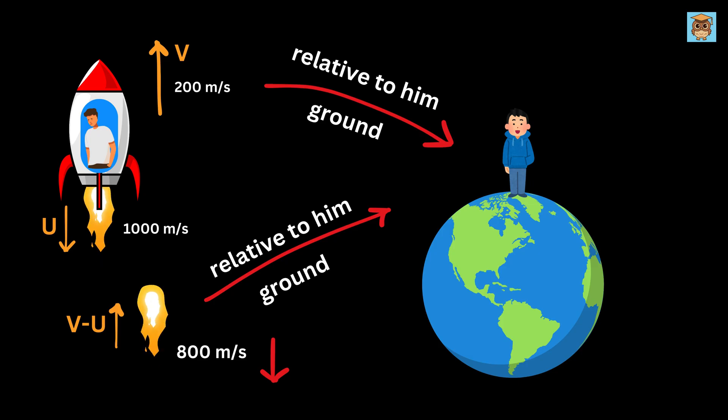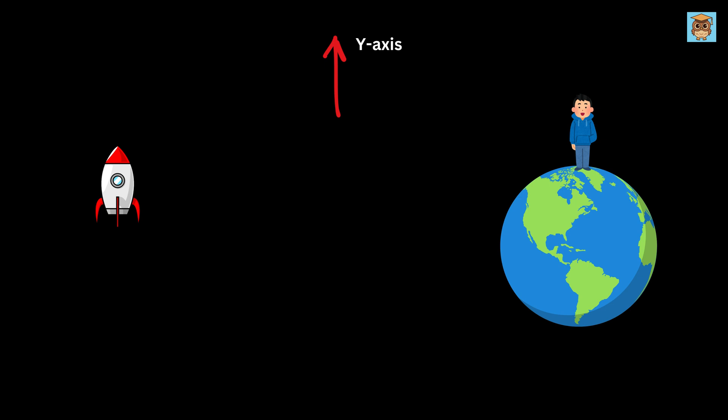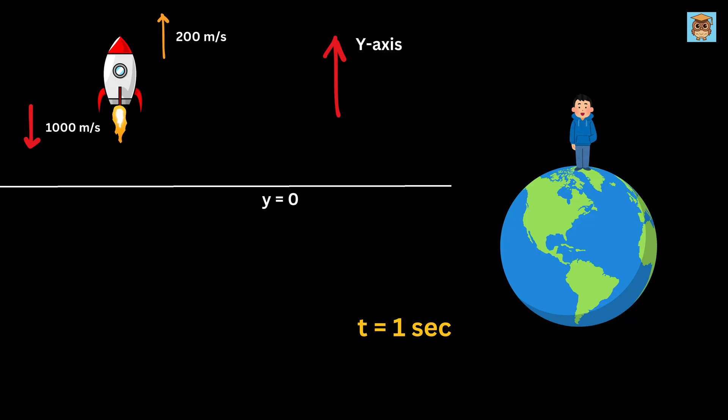But why is it v minus u, you may ask? Suppose this rocket is moving along the y-axis at 200 meters per second, and we draw this line where y equals zero with respect to the observer standing on earth. At this moment the fuel is ejected by the rocket down at 1,000 meters per second relative to the rocket. So after one second, the rocket will be at the point where y equals 200 meters, and the fuel's position will be 1,000 meters below this point, because the fuel speed of 1,000 meters per second is with respect to the rocket. Therefore its distance with respect to this point will be 800 meters. This means that with respect to the observer standing on earth, the speed of fuel is 800 meters per second downward.